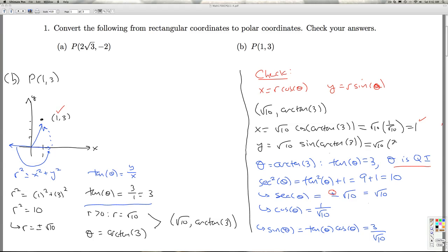And radical 10 sine of arctangent 3, that's radical 10 times 3 over radical 10, which is 3. And that's exactly what it's supposed to be.